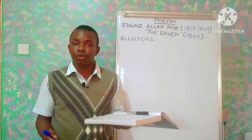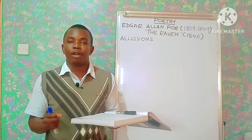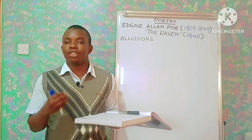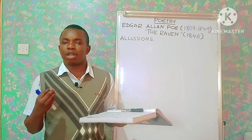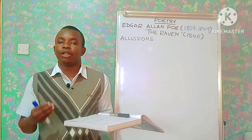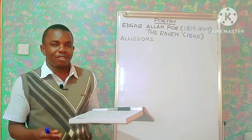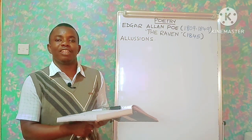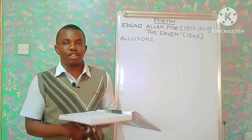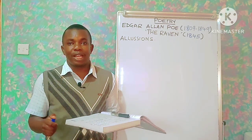Hello viewers, welcome to my YouTube channel. In this video I will be taking you through a poem by Edgar Allan Poe. For those who know him, Edgar Allan Poe is majorly known and credited for short story writing. He's one of the forces, together with Anton Chekhov in Europe, who came up with the idea of the short story. But there is one of his eerie poems, and that is 'The Raven,' published in the year 1845. Edgar Allan Poe himself lived between 1809 and 1849.